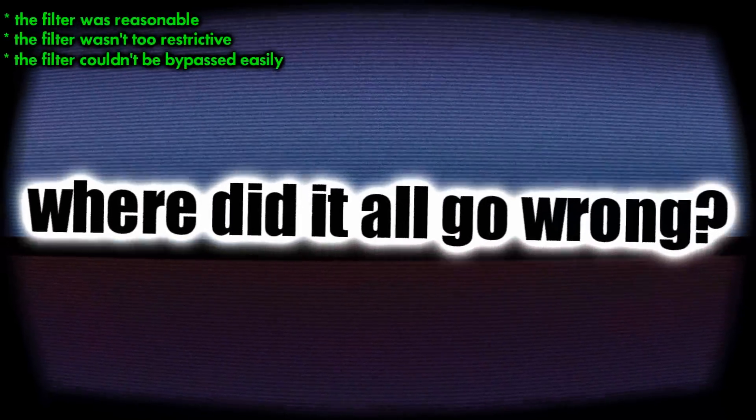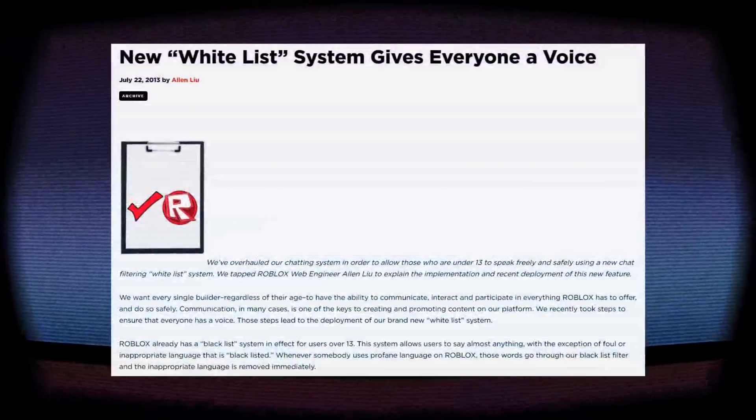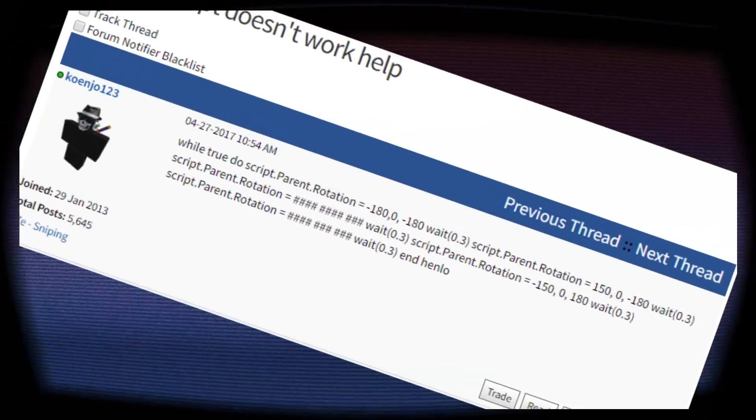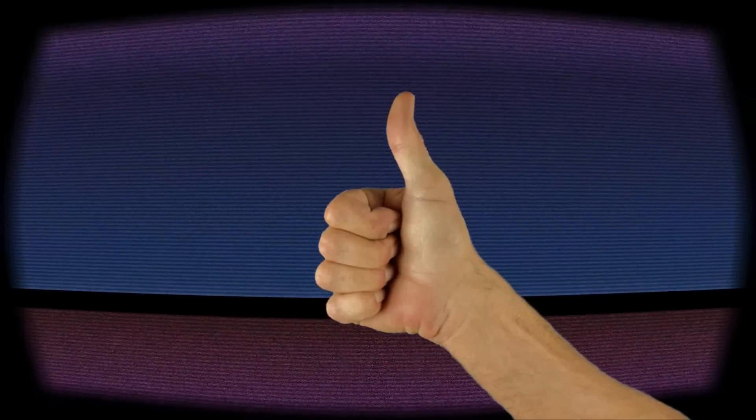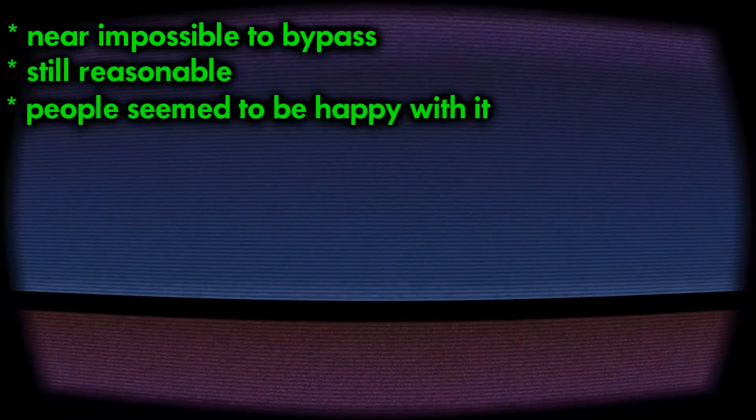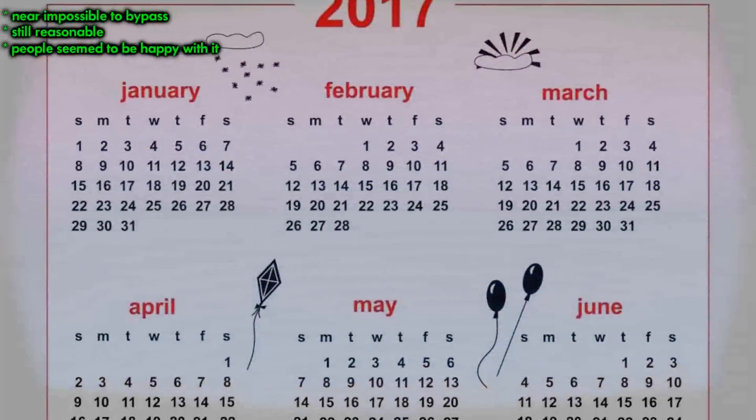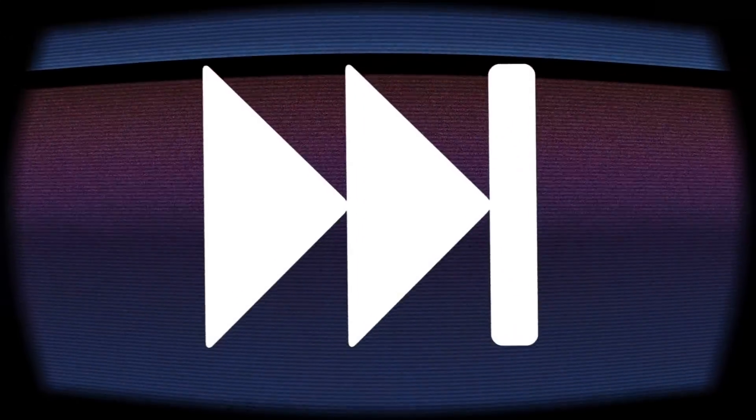So where did it all go wrong? How did we go from that to this? Well, nothing really happened up until recently. Fast forward to late 2016 — everything seemed to be fine with the chat filter. It was near impossible to bypass at this point, the filtered words were still reasonable, and most people seemed to be happy with it. That is, until recently. Fast forward once more to early 2017, and things got bad.